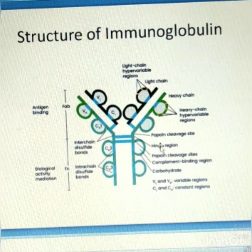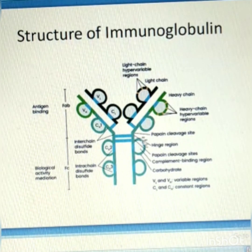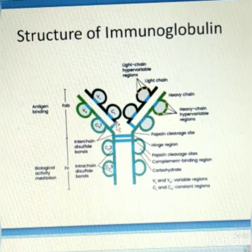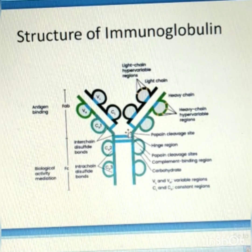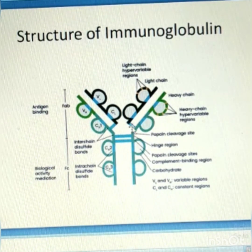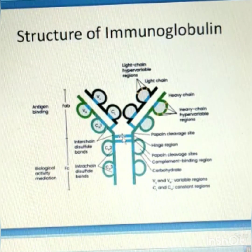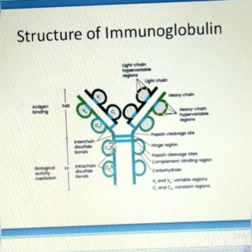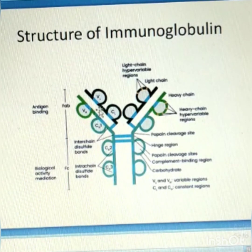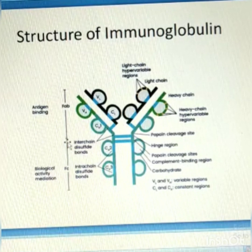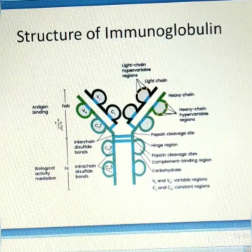If we consider the structure of immunoglobulin in detail, we can find the light chains and the heavy chains. This is the hinge region, and those are the disulfide bonds that join these chains — these are inter-chain disulfide bonds, and those are intra-chain disulfide bonds because they are within one chain. This is the variable region and this is the constant region. This is the FAB region — the fragment of antibody — and this is the crystallizable fragment, that is the Fc region of an antibody.